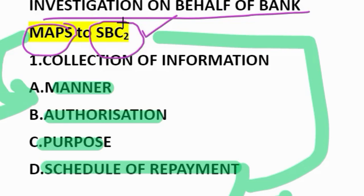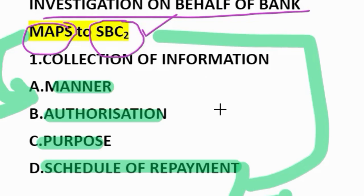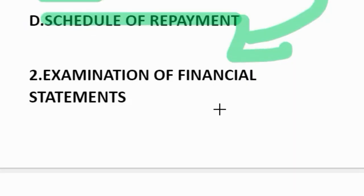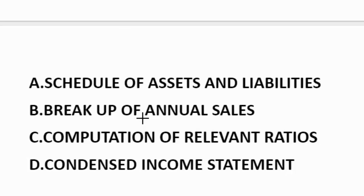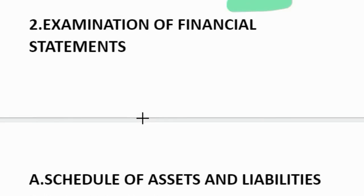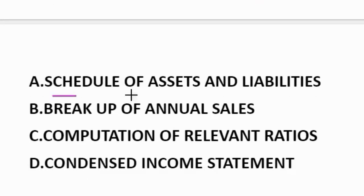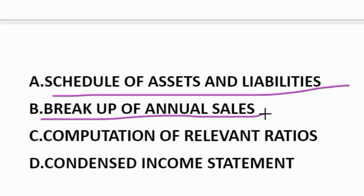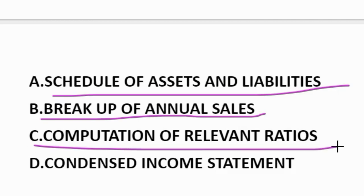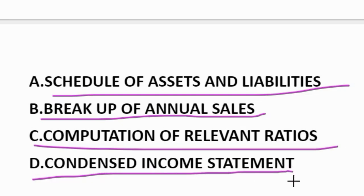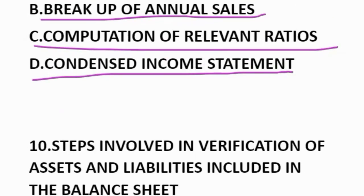SBC comes under examination of financial statements. S stands for schedule of assets and liabilities. B stands for breakup of annual sales. C stands for computation of relevant ratios. Another C stands for condensed income statement — that is, preparation of condensed income statement.